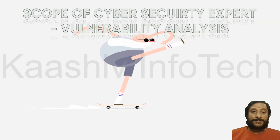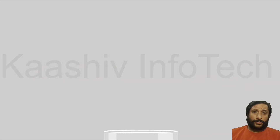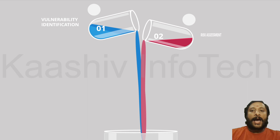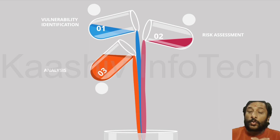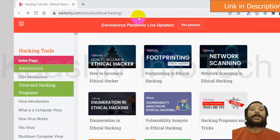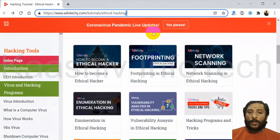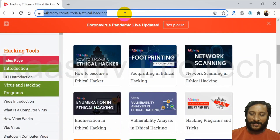Let's move on to vulnerability analysis. Once the vulnerability is found, here is what you need to do: first, identify the vulnerability; second, find what is the risk of that vulnerability; third, do analysis on it; and finally, prepare the remediation — the recovery process from the vulnerability. Go to the same link, scroll down to vulnerability analysis in ethical hacking, click it, and see the entire content.